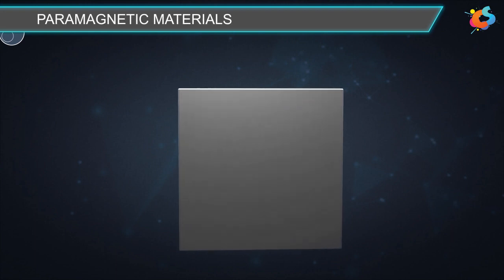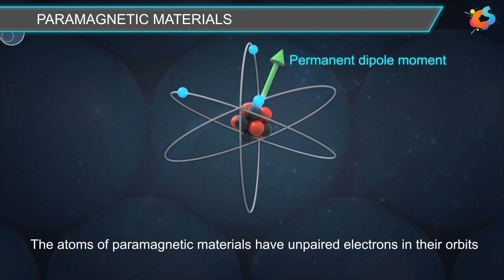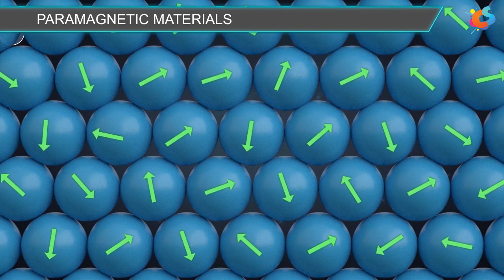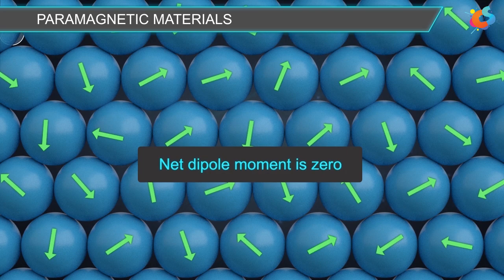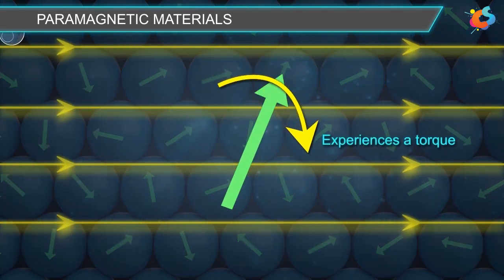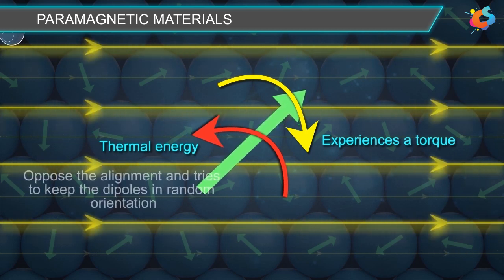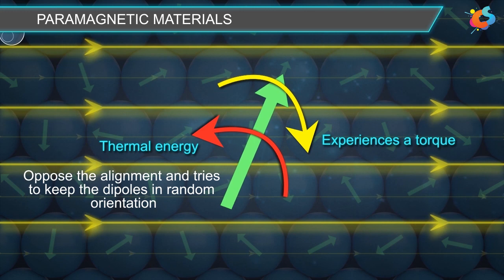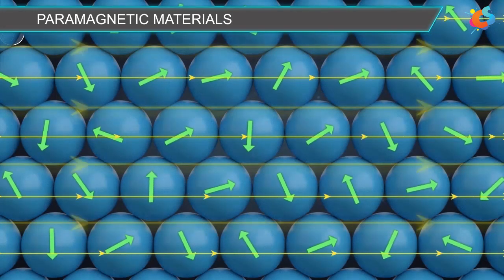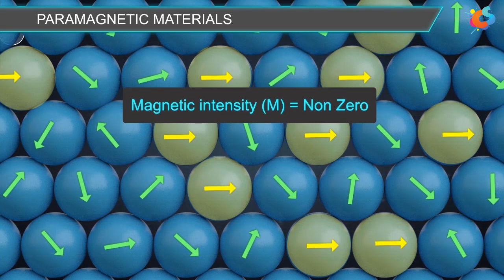Paramagnetic materials. The atoms of paramagnetic materials have unpaired electrons in their orbits, due to which they have a permanent dipole moment. In the absence of an external magnetic field, the magnetic moments of atoms are randomly oriented and the net dipole moment is zero. When an external magnetic field is applied, the magnetic dipoles experience a torque and try to align in the direction of the applied field. At the same time, the thermal energy of the material opposes the alignment. Due to these opposing factors, only a small number of dipoles align with the field, and the magnetization intensity becomes non-zero.